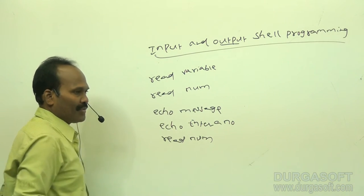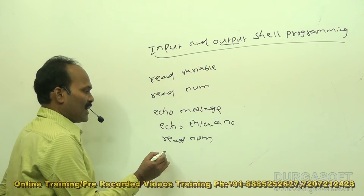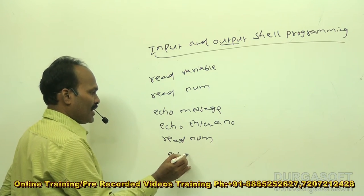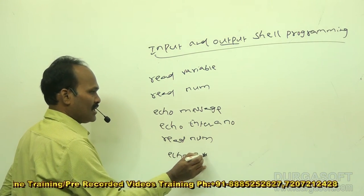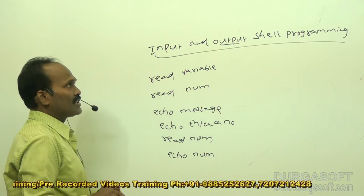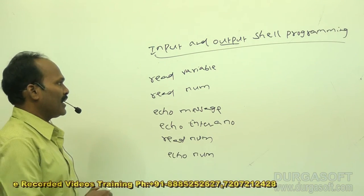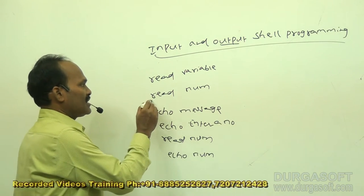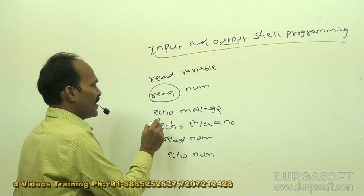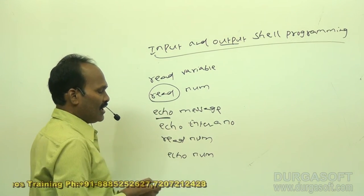After the input process, you can perform any kind of processing. To display the number given by the user, use echo num. The main commands to remember are: the read command for reading input from the keyboard, and the echo command for displaying output on the monitor.